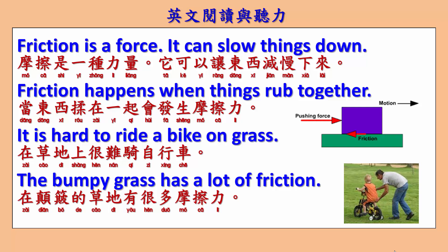Friction is a force. It can slow things down. Friction happens when things rub together. It is hard to ride a bike on grass. The bumpy grass has a lot of friction.